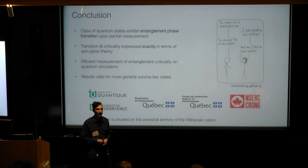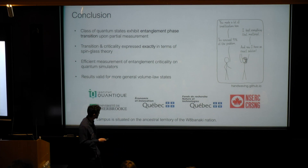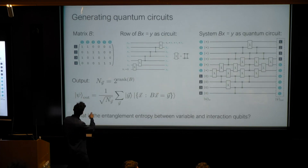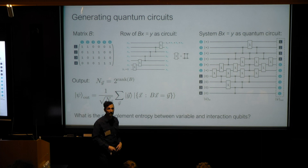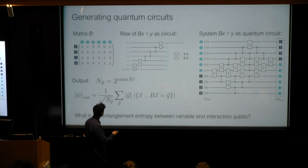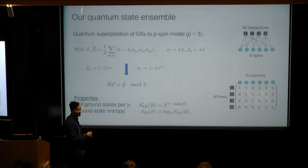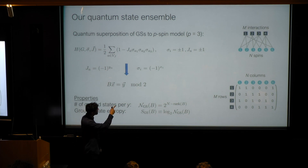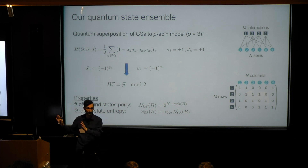Question: there's a remark about mapping onto a statistical disordered model — is there any randomness in the Hamiltonian? Yes, the randomness is in the matrix B. The rows of B are sampled randomly — the positions of the ones are picked randomly for each row. Going back to the p-spin model, the randomness is in both the sign of the J couplings, which are sampled randomly, and the structure of the graph, which is also assembled randomly.